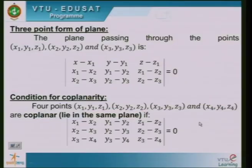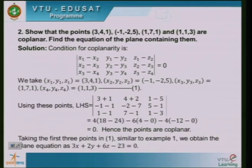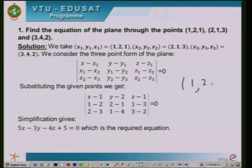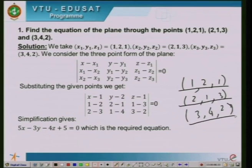Example 1: Find the equation of the plane passing through the points (1, 2, 1), (2, 1, 3), and (3, 4, 2). We label X1 Y1 Z1 as (1, 2, 1), X2 Y2 Z2 as (2, 1, 3), and X3 Y3 Z3 as (3, 4, 2). Since three points are given, we go directly to the three point form.